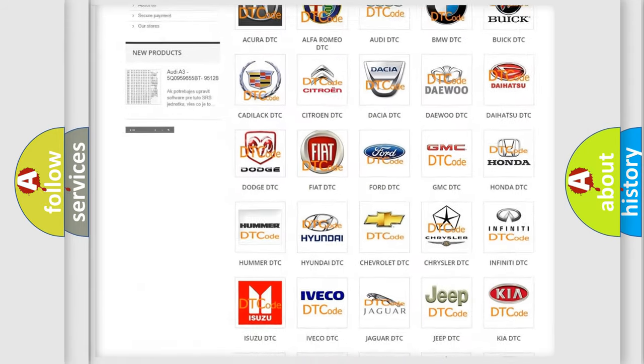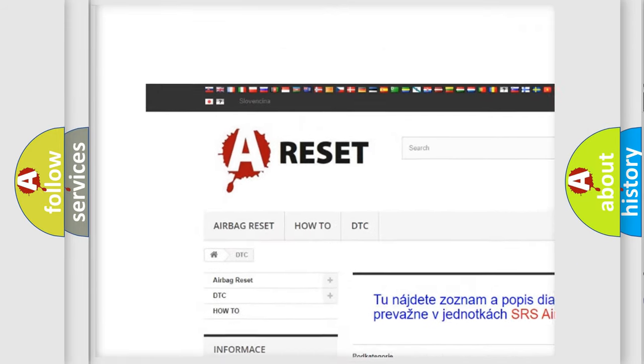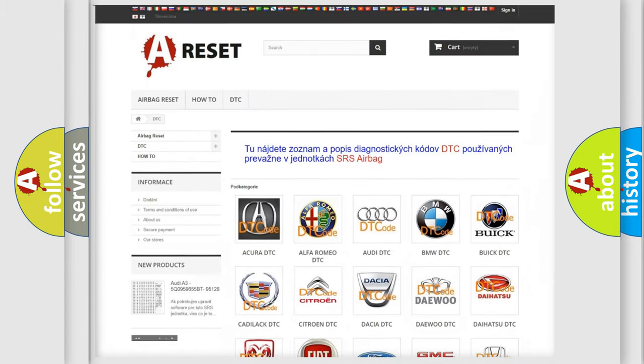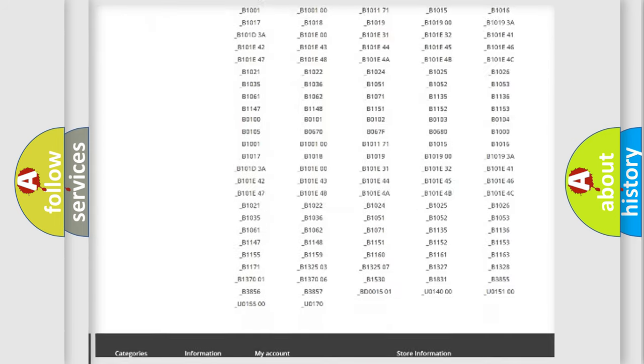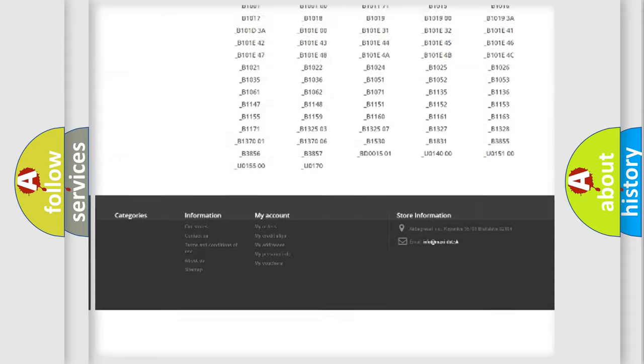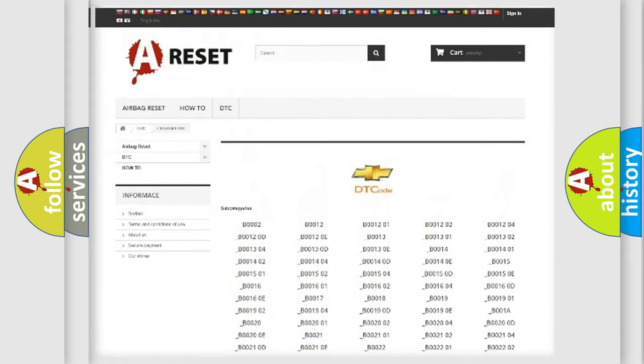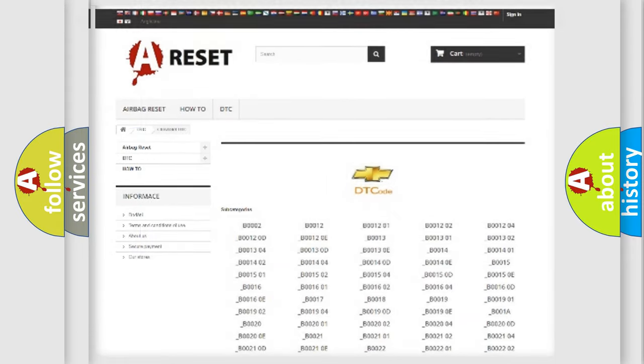Our website airbagreset.sk produces useful videos for you. You do not have to go through the OBD2 protocol anymore to know how to troubleshoot any car breakdown. You will find all the diagnostic codes that can be diagnosed in Chevrolet vehicles, and many other useful things.